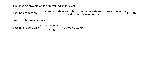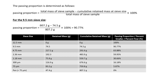Let's do a sample calculation for the 9.5 millimeter sieve size. It becomes 807.2 minus 74.5, which is the cumulative retained mass for this particular sieve size. Then we divide by the total mass of the sieve sample and multiply by 100. This gives us 90.77%. What this tells us physically is that 90.77% of the sample fell through while the remaining was retained — that's exactly what passing proportion implies.